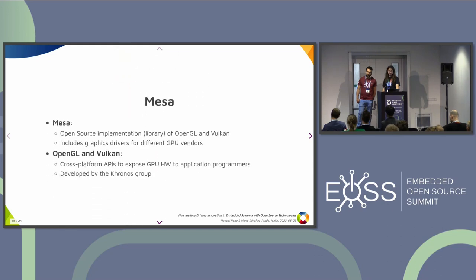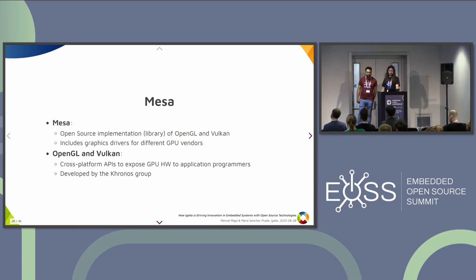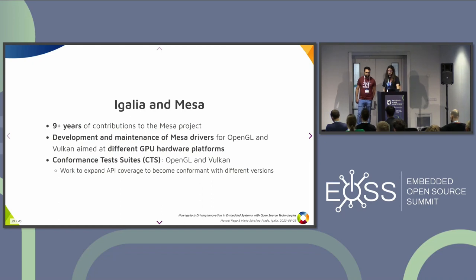On the graphics side, we work a lot on Mesa as well, with a graphics team working full-time on it. Mesa is an open source implementation of the OpenGL and Vulkan APIs, including drivers that communicate with different graphics cards at a higher level than the kernel. OpenGL and Vulkan are cross-platform APIs you can use to implement 3D applications and interact with GPU hardware. They are developed by the Khronos Group, which Igalia is also part of. Our relationship with Mesa is more than nine years. We've been developing and maintaining Mesa drivers for OpenGL and Vulkan targeting different GPUs, and we do work on conformance — ensuring drivers are not just correct but also complete in API coverage.